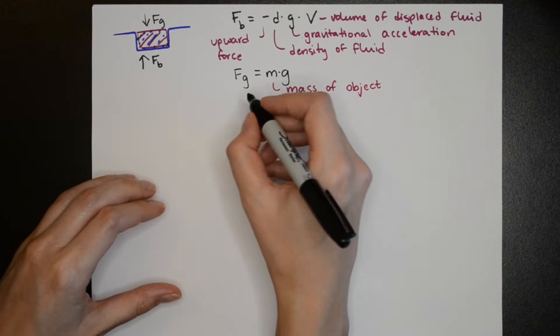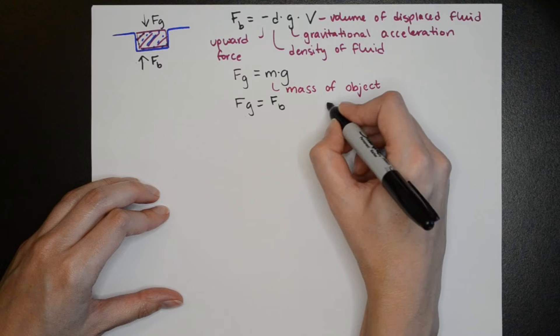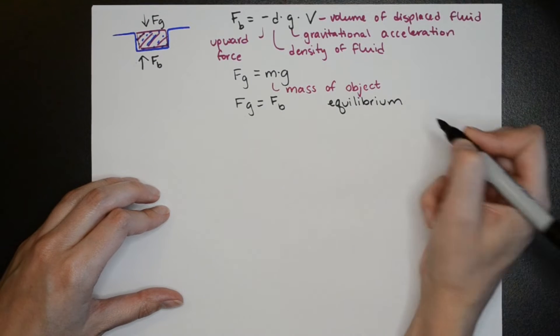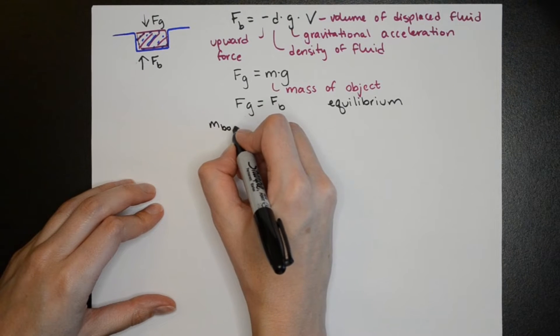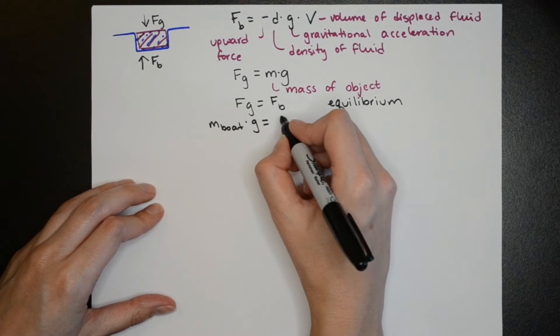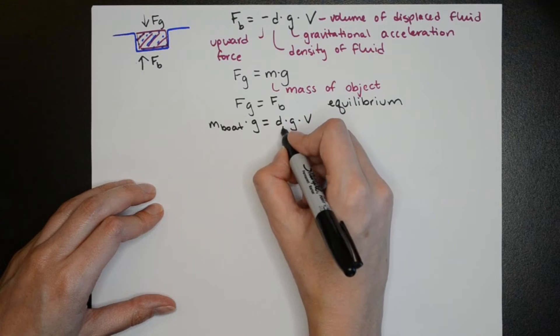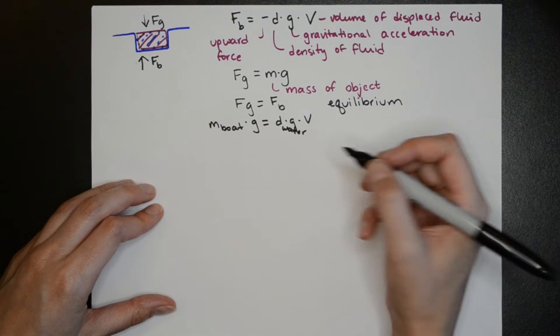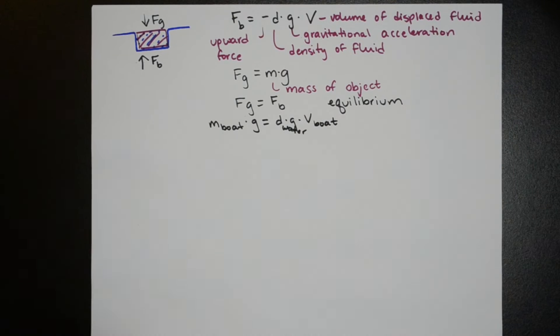The gravitational force is equal to the mass of the object times the gravitational acceleration. For an object to be in equilibrium or at rest the forces acting on it must cancel out. So we have Fg equals Fb. We can rewrite these as the mass of the boat times g, and Fb is equal to the density of water times g times the volume of the boat.